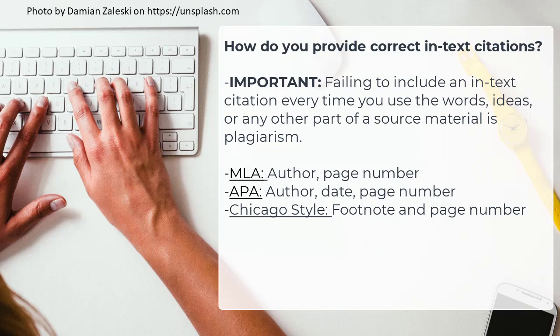Here is a list of what is typically required for each. MLA: parentheses containing the author's last name, or shortened title if there is no author, and a page number if available, where the source material may be located. APA: parentheses containing the author's last name or shortened title if there is no author, year of publication, and page number. Chicago style: a footnote based on the bibliography entry for each source, including the page number. Because MLA and APA both make use of parentheses, citing your source in these formats is also sometimes called parenthetical citation.